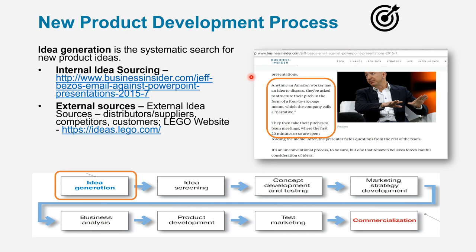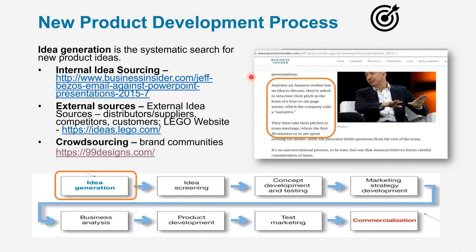Other ways to get ideas are through external sources — information from distributors, suppliers, even competitors and customers. A lot of ideas come through social media. You can also have a systematic approach like Lego does. Lego has a website called ideas.lego.com where kids go and put their ideas. Then there's crowdsourcing — when ideas come together in a community setting. One great example is 99designs. As a marketing consultant in Hawaii, I use 99designs to create logos — I put out my requirements and anybody in the world can bid on creating a logo for me. Ideas can be developed from a global standpoint. Those are three ways to generate ideas.